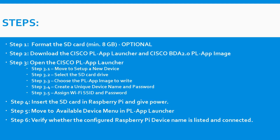These are all the steps to be carried out to execute this scenario. Step one, we have to format the SD card first. Minimum 8GB is required; if it is 16GB that is good enough, but minimum we have to go with 8GB. Formatting the SD card is optional - if you have already used your SD card for other data storage then you have to do this format, otherwise no need if you are buying a new one.